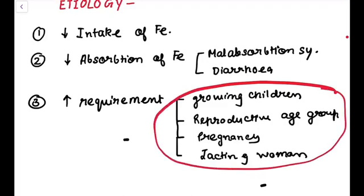Considering this, the iron supplement and double fortified salt with iron and iodine are included in Poshan Abhiyan by the government, so that the incidence of iron deficiency anemia can be decreased in this group that are growing children, reproductive age group, pregnant women and lactating women.